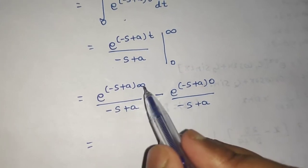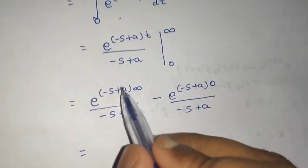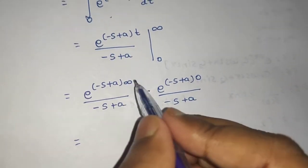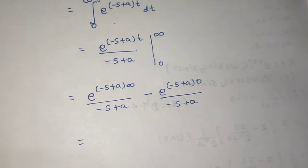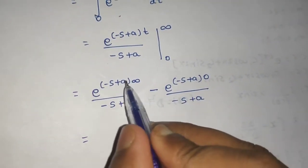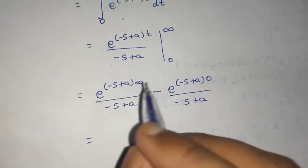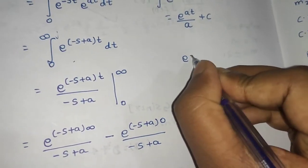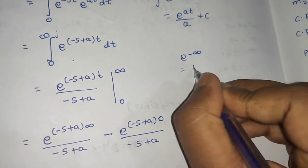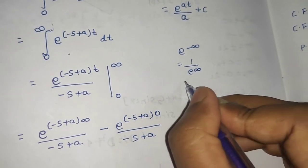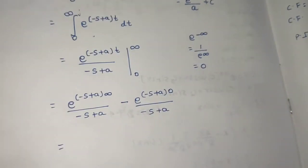This will become infinity if this bracket will be positive because e power positive infinity is infinity only. I want this to become negative so that I will get e power minus infinity because I know e power minus infinity is 1 upon e power infinity and 1 upon very big quantity is 0.